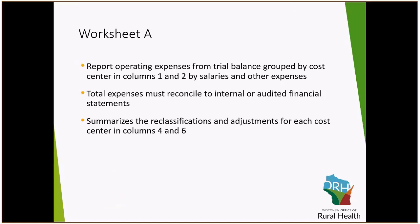Worksheet A is where we are reporting all of our gross expenses, our gross operating expenses. Columns 1 and 2 are where we're reporting all of our expenses: column 1 is where we report all salary, and column 2 is where we report all other expenses. Worksheet A must reconcile to your internal or audited financial statements, and that reconciliation, if it is different, is a required form to submit with your cost report submission, dating back to a Worksheet S2 question. We have to basically certify that our expenses are accurate and align with what we're reporting on our internal or audited financial statements.